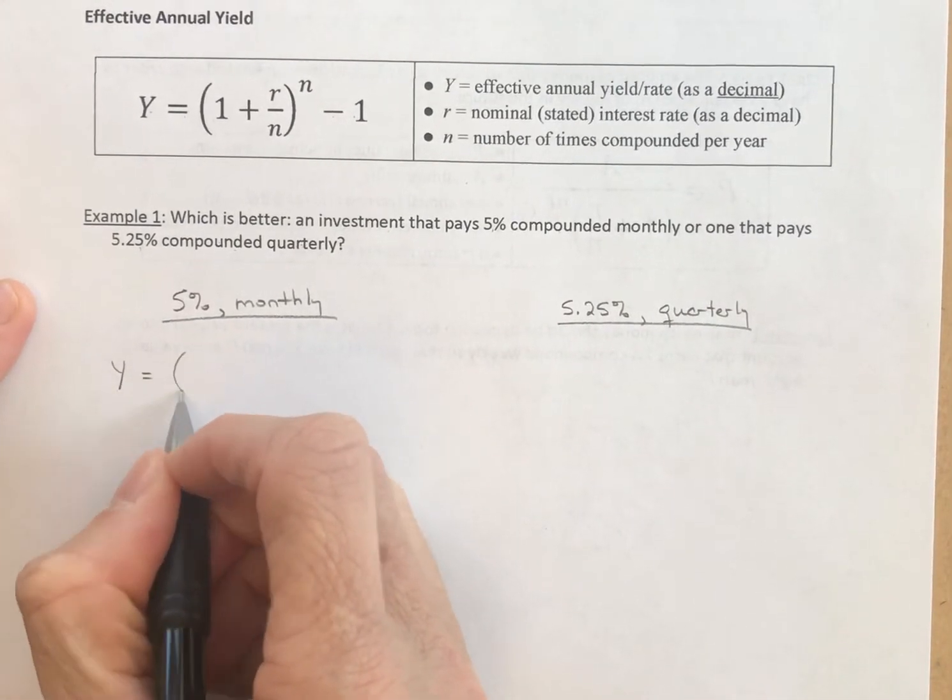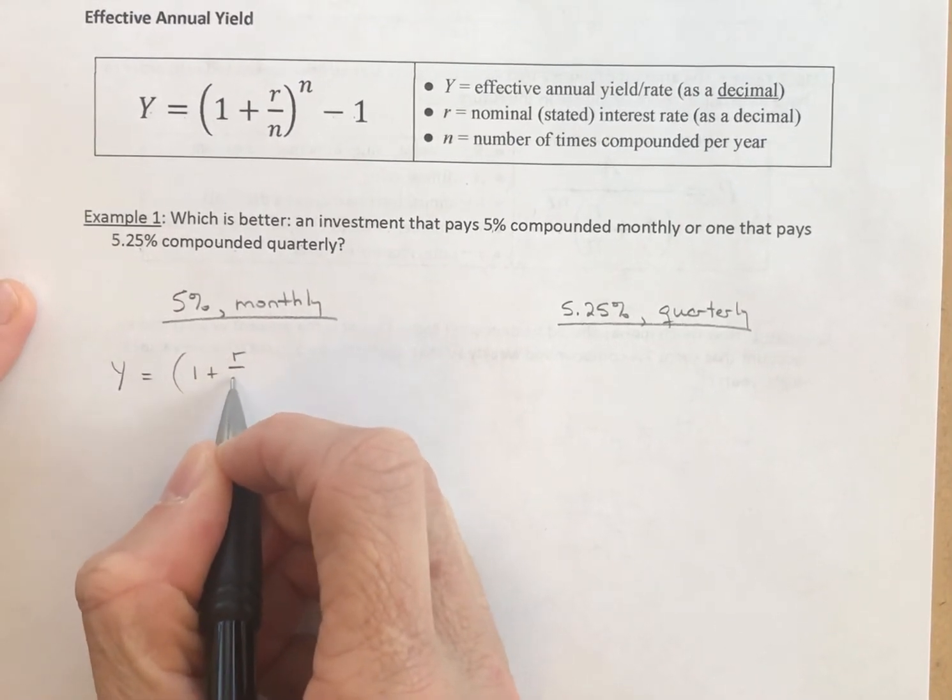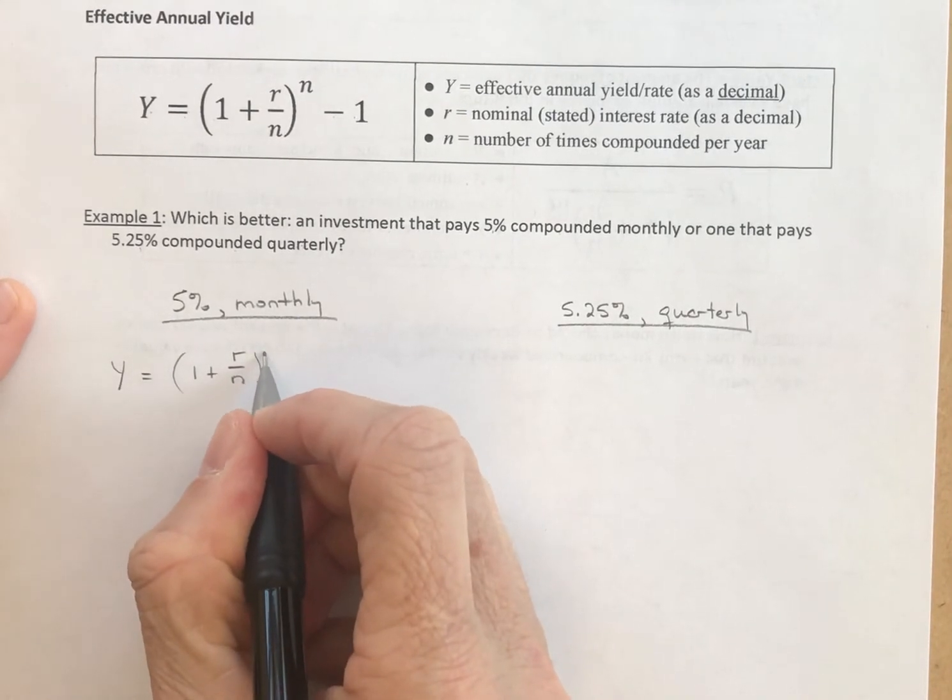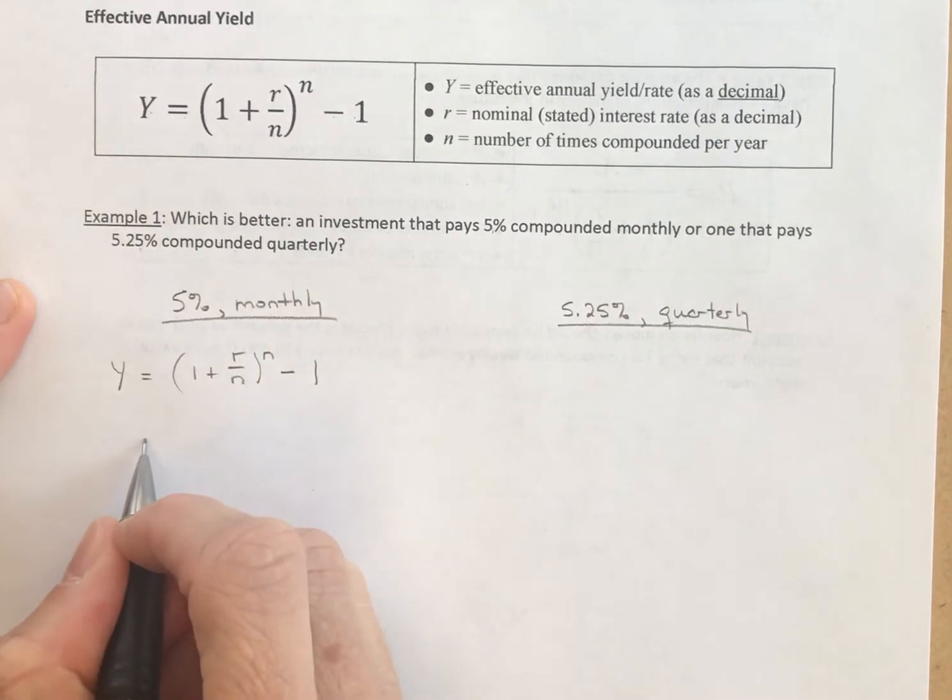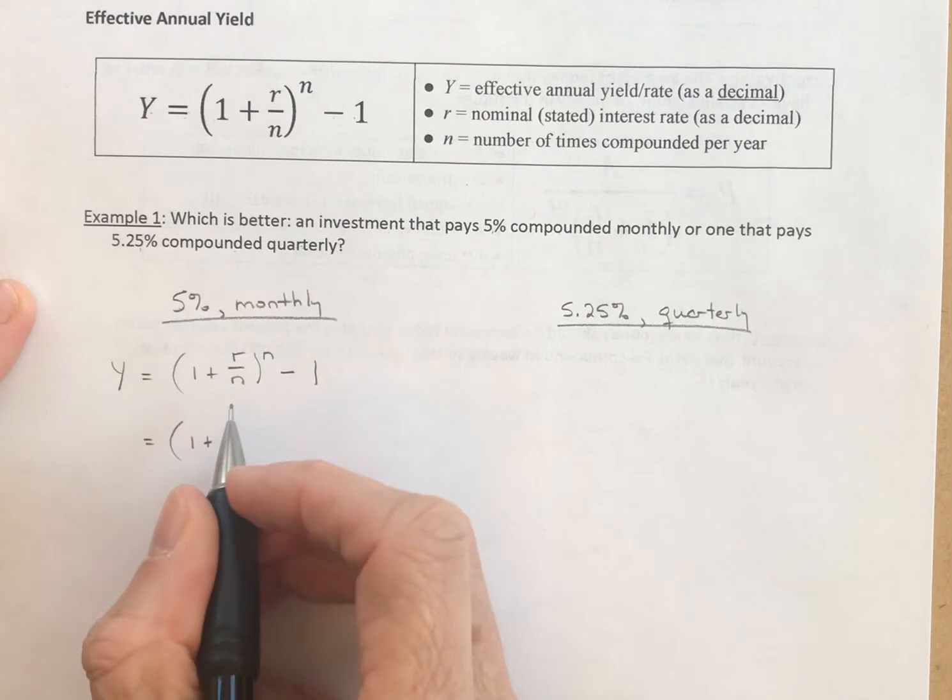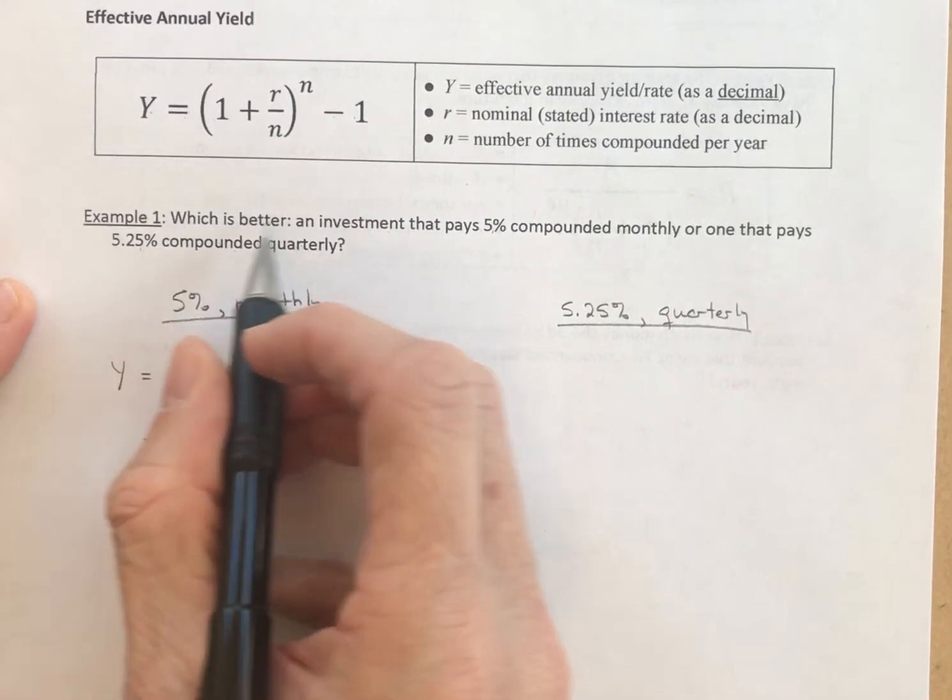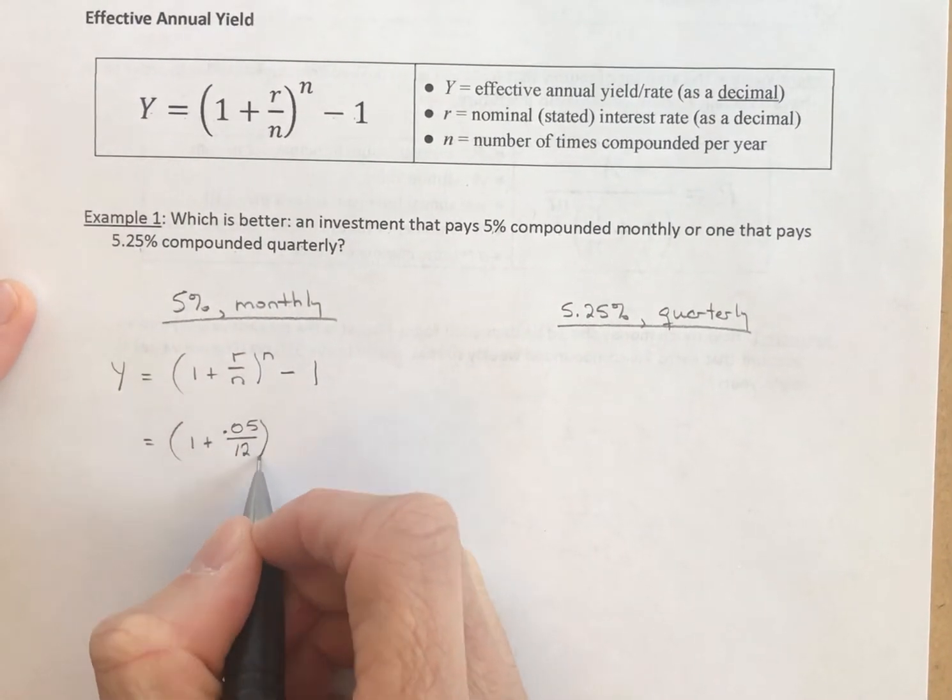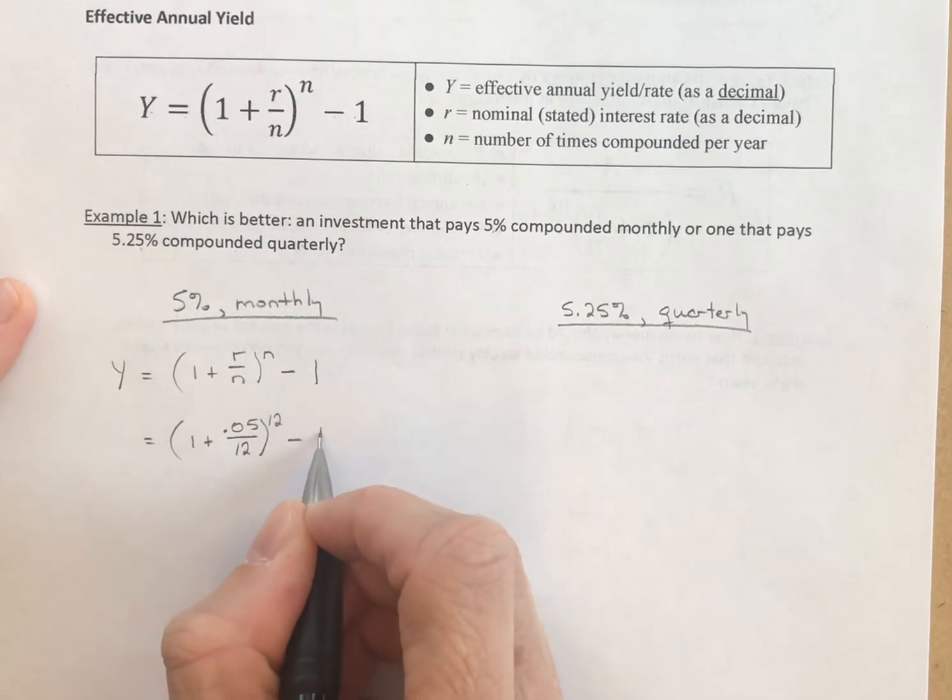The yield equals 1 plus the rate as a decimal, divided by the number of times compounded per year, raised to the number of times compounded per year, minus 1. 1 plus the rate is 5%, as a decimal 0.05. We are compounding monthly, that's 12 times per year. The 12 also goes up here, and then from this calculation we'll subtract 1.